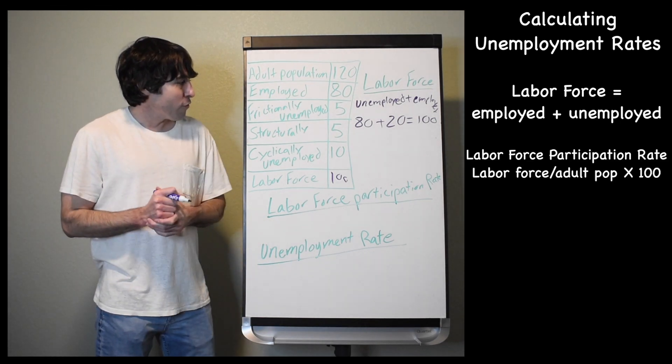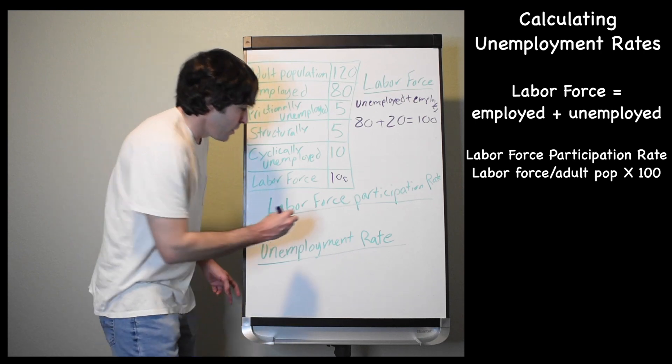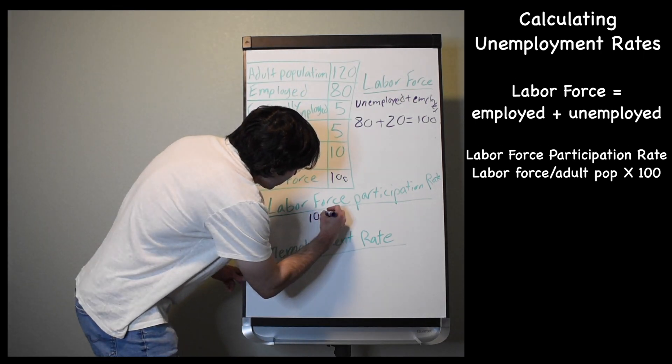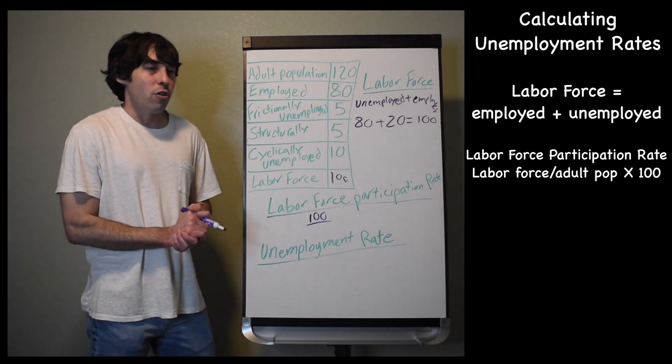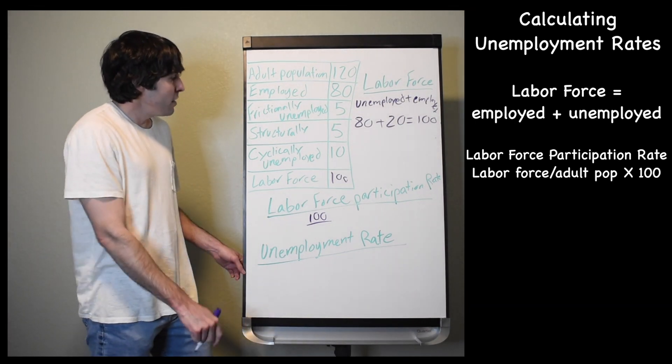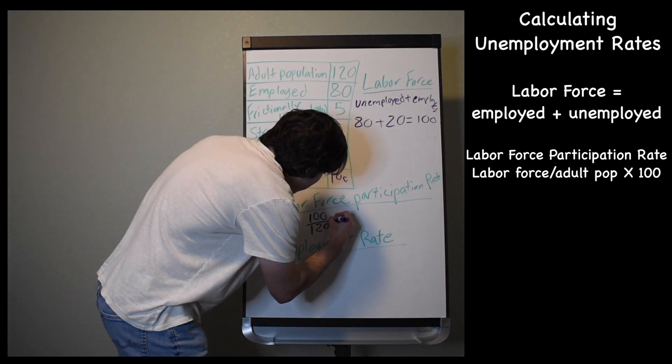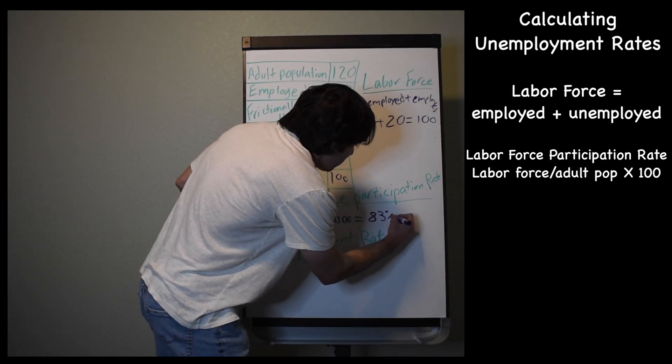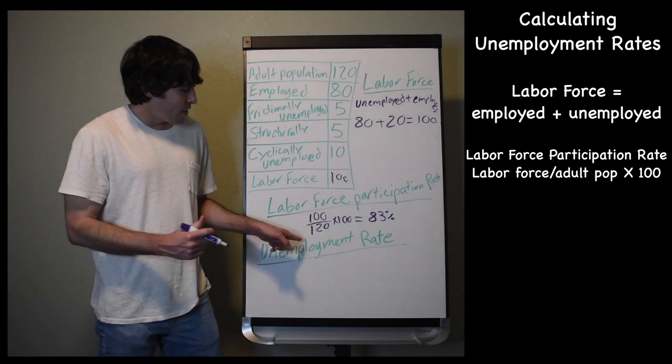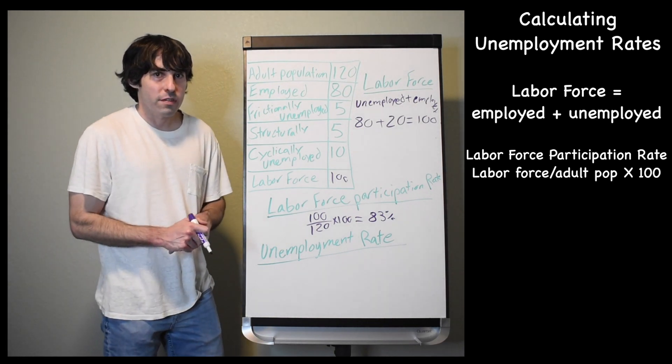Next, to calculate our labor force participation rate, we're going to take that labor force, the number that we just calculated, divide that by the adult population or the working age population, and then multiply it by 100. So it's going to be 100 divided by 120, and that's going to come out to 83%. So 100 divided by 120 times 100 gives us an 83% labor force participation rate.